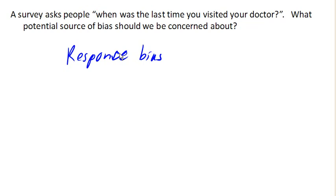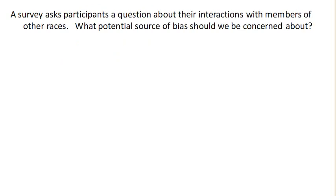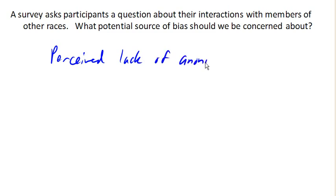Suppose a survey asks participants a question about their interactions with members of other races — how well they get along with, say, Black people or Asians. What would we be concerned about here? This is something called a perceived lack of anonymity. Particularly if this was being given in a face-to-face interview, the person being asked might — if they have racial biases — be uncomfortable sharing that because they don't want to be perceived as racist, and so they may be disinclined to give an accurate answer.